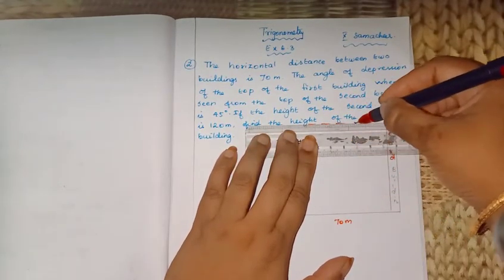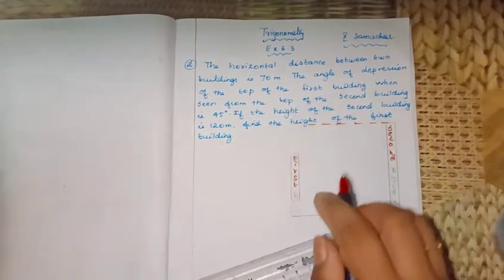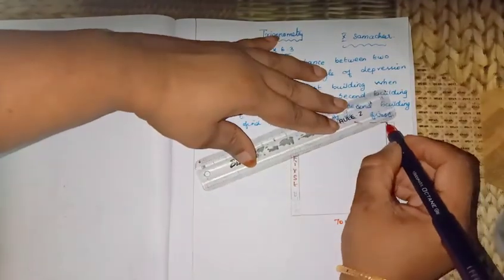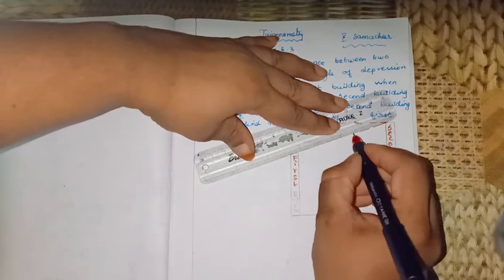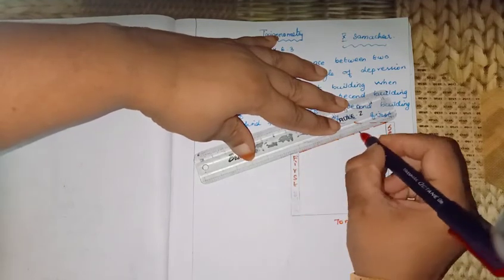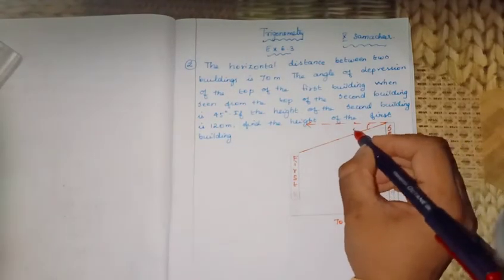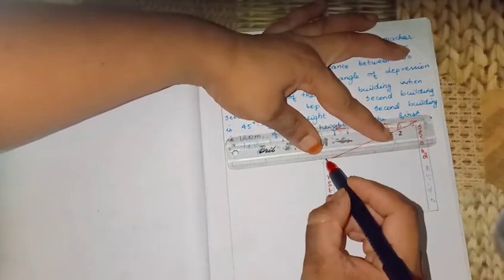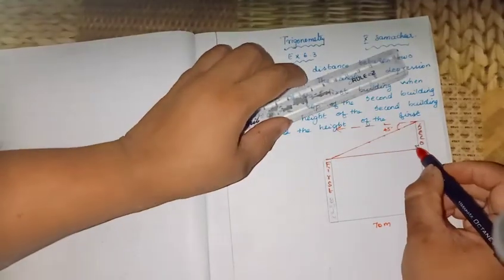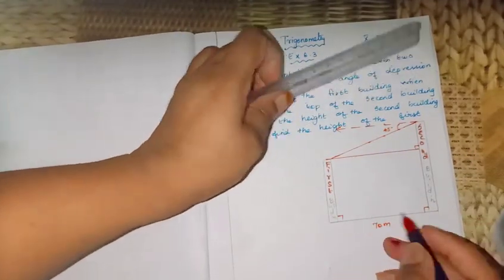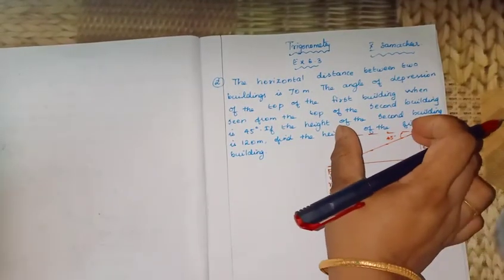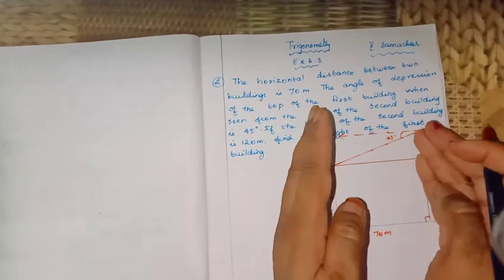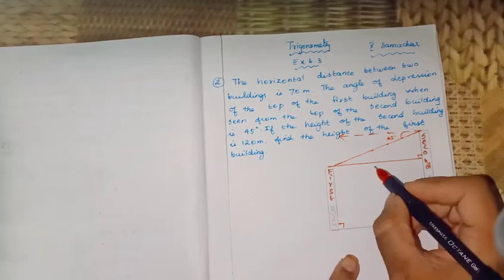We draw the horizontal distance from the top of the first building. This is the line of depression, and this angle is 45 degrees. We also draw the horizontal distance from the bottom of the second building and connect them. Since the buildings are perpendicular to the ground, we have right angle triangles. This horizontal line of sight is parallel to the ground, so the distance is the same — 70 meters here and 70 meters here.